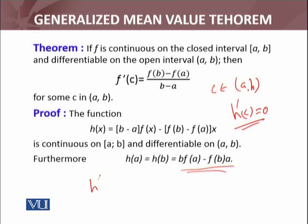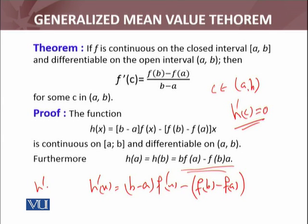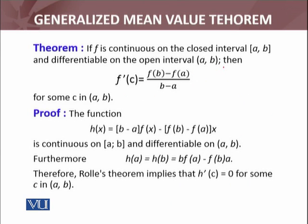Now h'(x) will be (b - a)f'(x) minus [f(b) - f(a)]. h'(c) equals zero, so (b - a)f'(c) minus [f(b) - f(a)] equals zero. Simplifying this, you have the required expression. Hence it is proved.